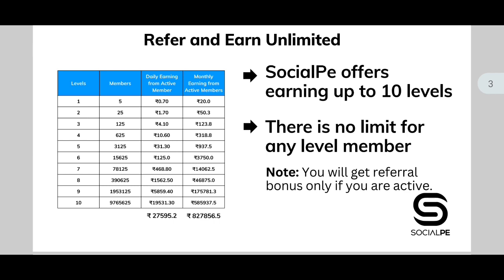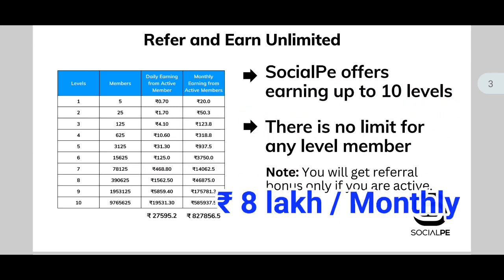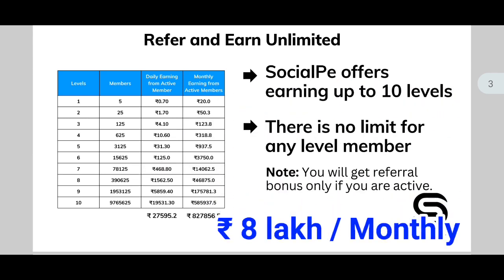If you refer five persons and each person also refers five, then your second level member count is 25, and your monthly income from that level is also 50 rupees. If you calculate this across levels one to twenty, you can earn 27,600 rupees per day and eight lakh twenty-seven thousand rupees monthly — if you follow the chart and refer five members at each level.